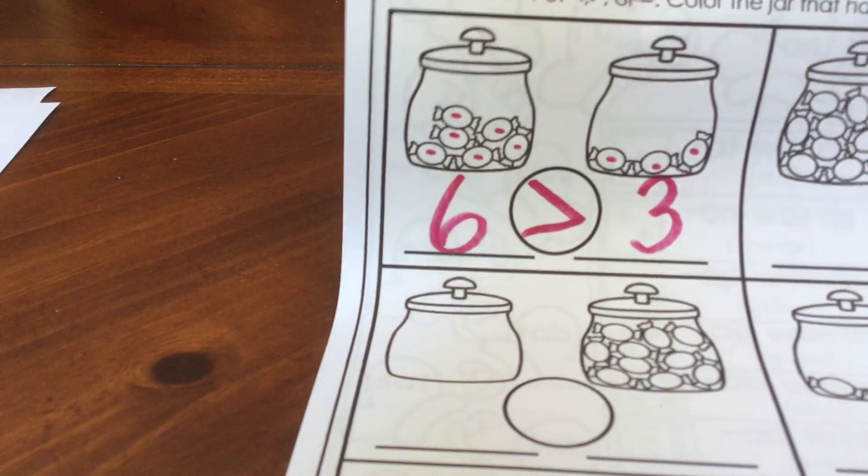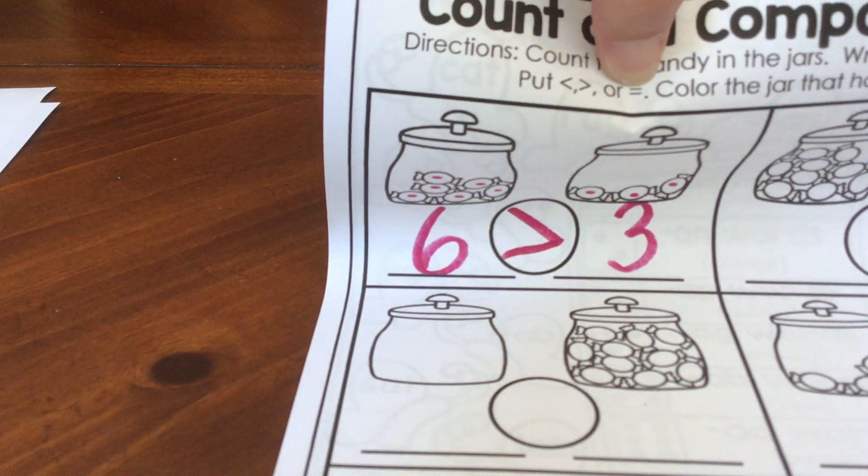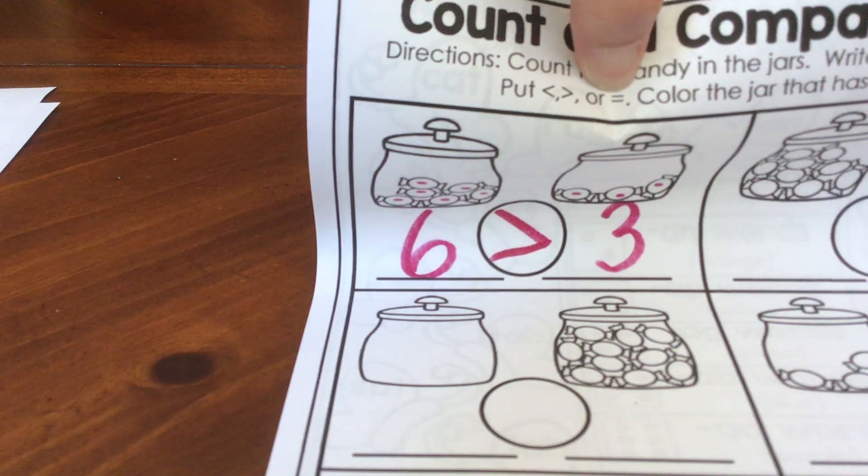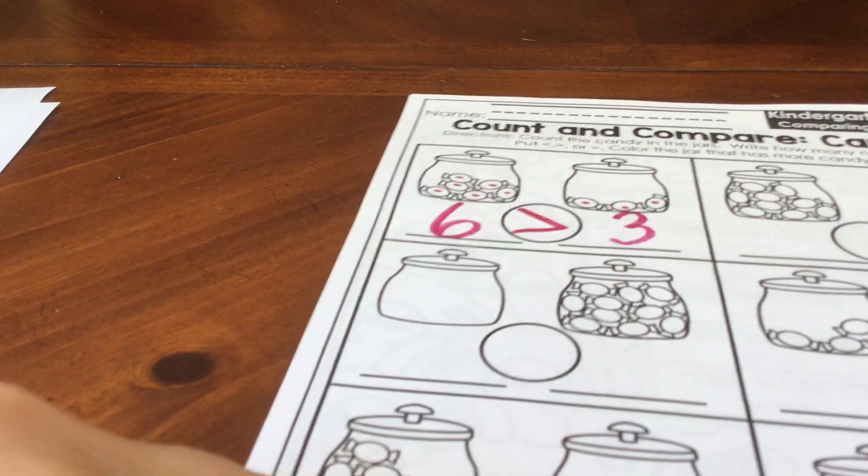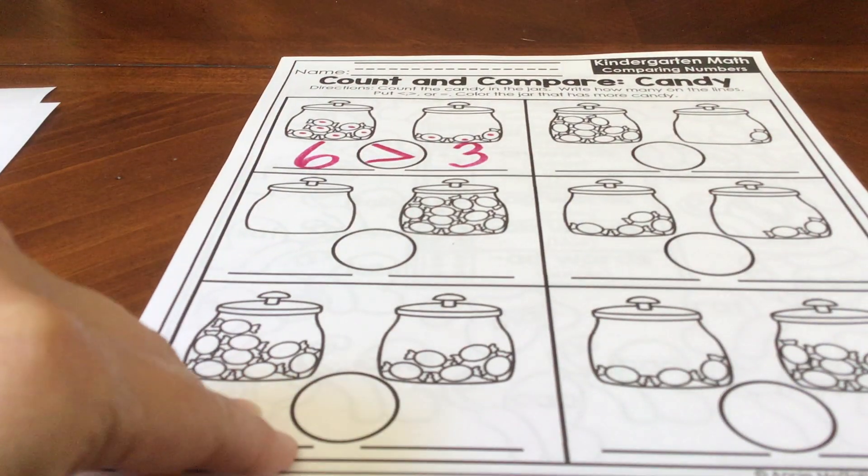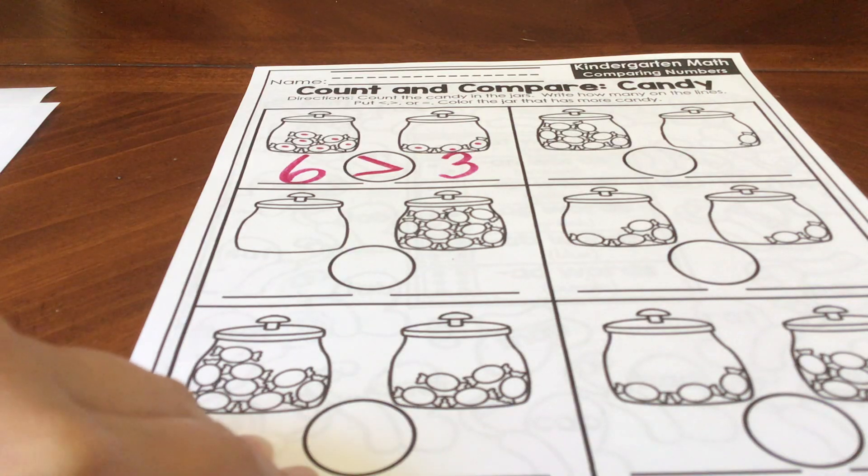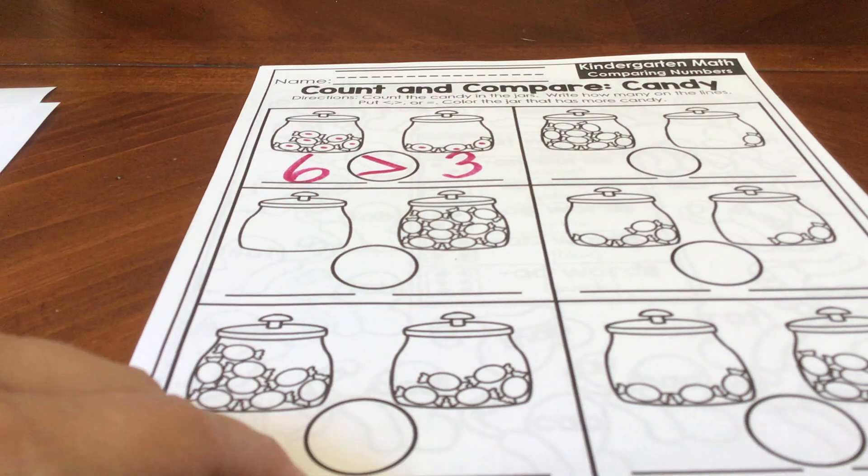And remember, if they are the same, then you're going to put this equal sign in between them. All right, and you have five more boxes to do. Count carefully. Some of the candies are really close together, so you may want to touch them or draw a dot in them as you count.